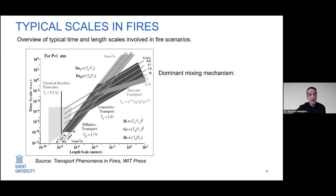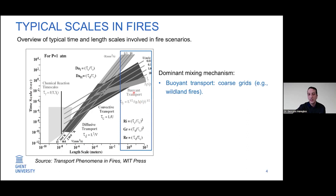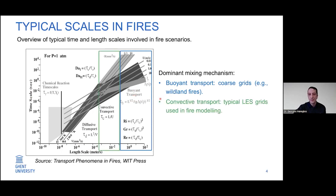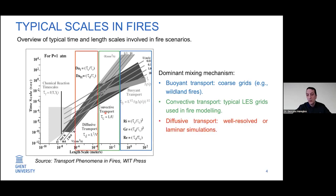We see the time scale on the vertical axis and the length scale on the horizontal axis. For mixing — important with respect to combustion in fires — we can distinguish between large length scales corresponding to coarse grids, where buoyant transport is important. At typical LES grid sizes used for fire modeling, convective transport is dominant. At smaller, well-resolved or quasi-laminar simulations, diffusive transport becomes important, and our mixing time scale should reflect that.